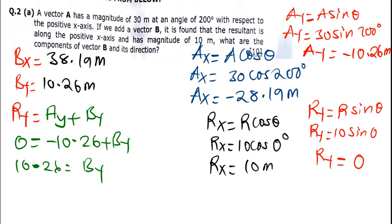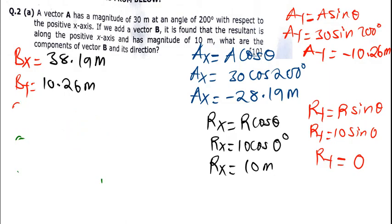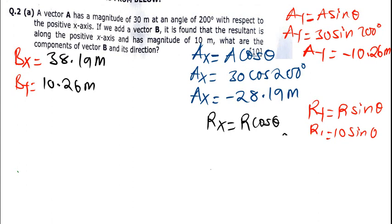So By = 10.26 meters. We have answered the first part: the x component of vector B is 38.19 meters and the y component is 10.26 meters. Now we need to find the direction.